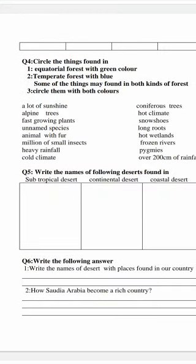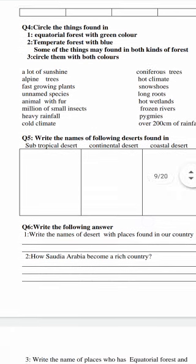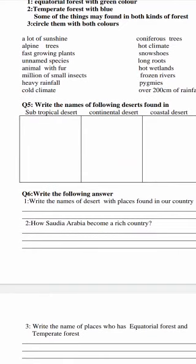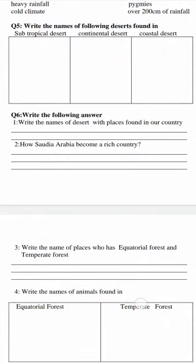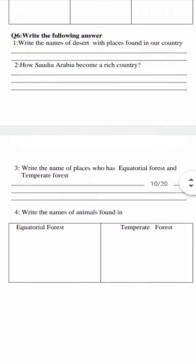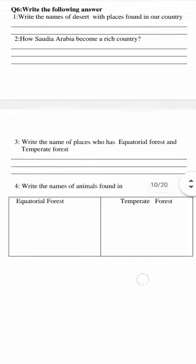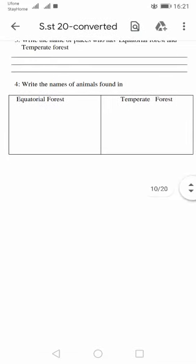Question number four: circle the things found in equatorial forest with green color and temperate forest with blue color. Two sets of items are given — circle those found in equatorial forest in green and those in temperate forest in blue. Question number five: write the names of deserts found in subtropical deserts, continental deserts, and coastal deserts. Question number six: write the names of deserts with places found in our country; how Saudi Arabia became a rich country; and write the names of places that have equatorial forest and temperate forest.